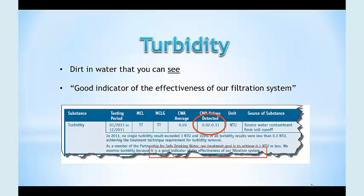As you'll see on our sample report here, their turbidity level was very low, testing at 0.03 NTU, which stands for nephelometric turbidity unit. As you can see on the water report, it says it's a good indicator of the effectiveness of their filtration system.